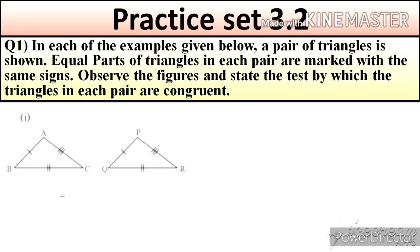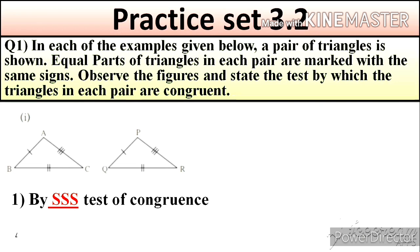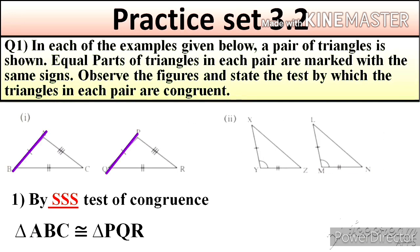Now we will start with Practice Set No. 3.2. Question number 1: In each of the examples given below, a pair of triangles is shown. Equal parts of triangles in each pair are marked with the same identical markings. Observe the figure and state the test by which the triangles in each pair are congruent. In the first figure, side AB is congruent to side PQ, side BC is congruent to side QR, and side AC is congruent to side PR. So by SSS test of congruence, triangle ABC is congruent to triangle PQR.